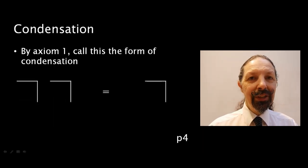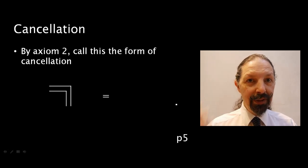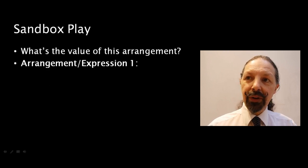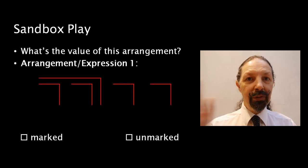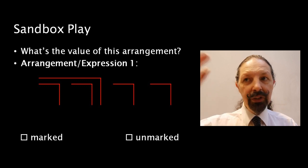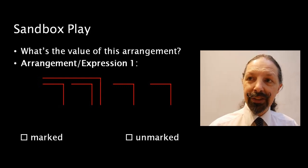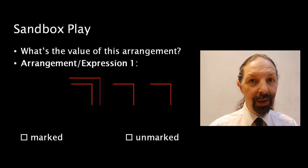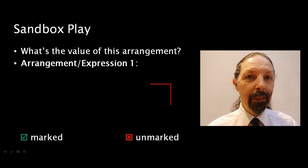You remember that two marks side by side can condense to one and mark over mark can be cancelled because it's equivalent to the space in which it is contained. So what's the value of this arrangement? I like to work systematically. I like to work from left to right and from bottom to top. So the first thing I see are two marks side by side. I'm going to condense them and that leaves mark over mark which can get cancelled. Then there's another act of condensation and that leaves an expression which has a marked value.